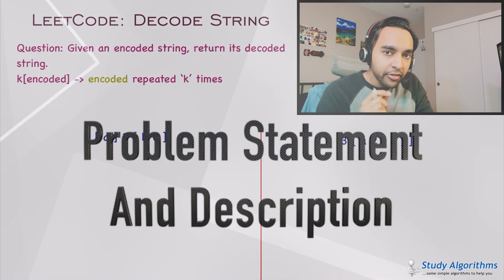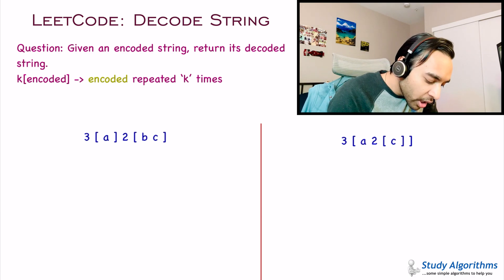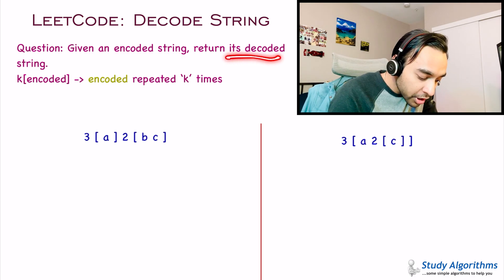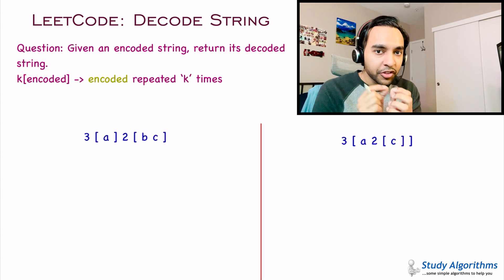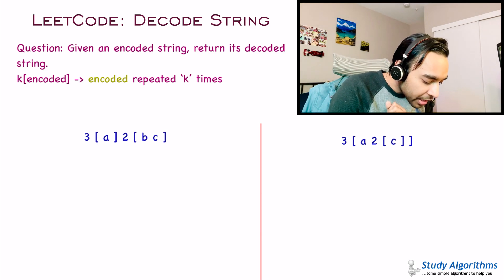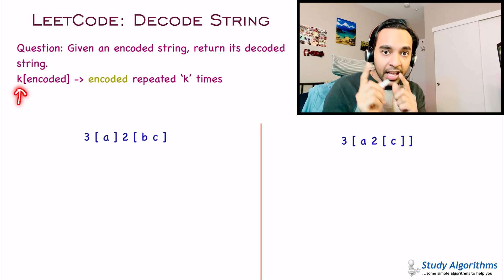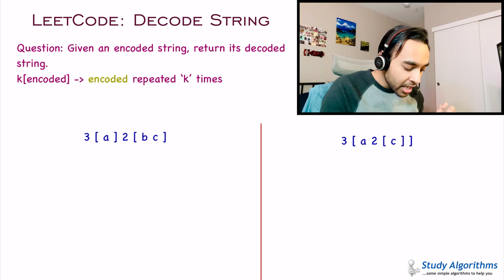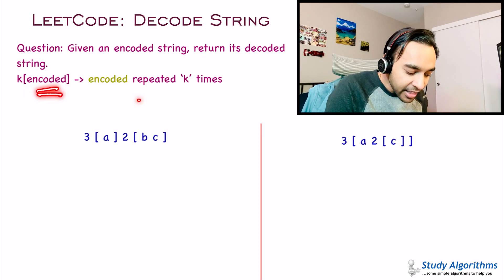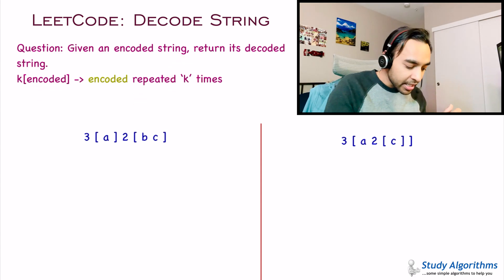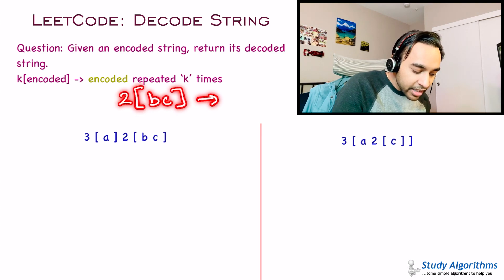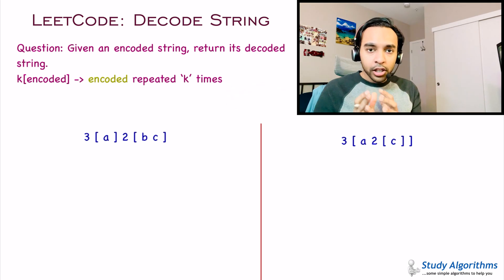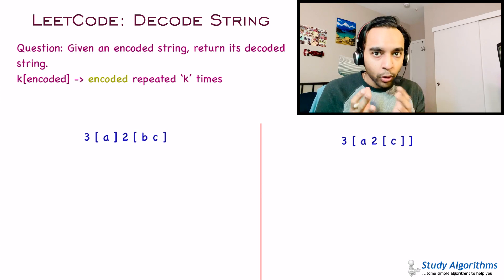You are given an encoded string and you have to return its decoded version. There are certain rules about how this string is encoded. For example, you have a number k outside and inside the bracket you have your encoded string. When this opens up, your output will be the encoded string repeated k number of times. So if you have the number 2 outside and bc inside the brackets, the decoded string would be bcbc.